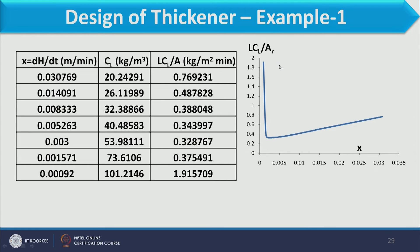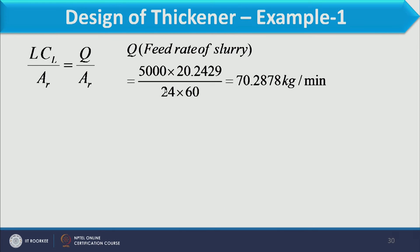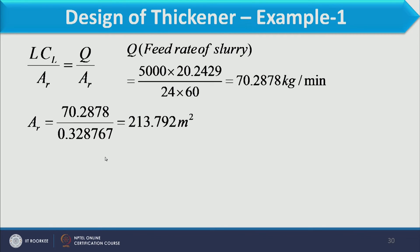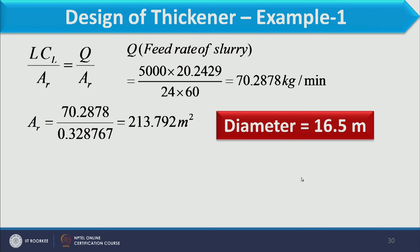Drawing the graph of LCL/AR versus CL, we find the minimum possible value, which occurs at X equal to 0.003 and equals 0.328767. Once we have this minimum value, we calculate the corresponding area. Q, the feed rate to the slurry, is 5000 × 20.2429 / (24 × 60) = 70.2878 kg/min. The cross-sectional area is calculated as 213 m², giving a diameter of 16.5 meters.